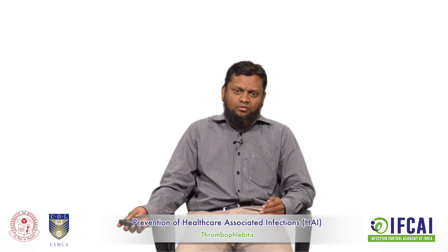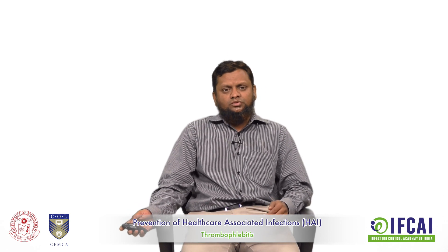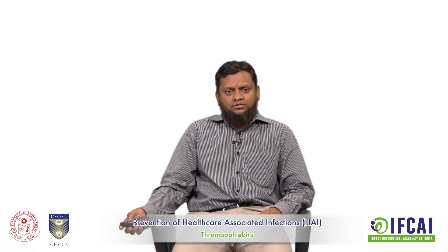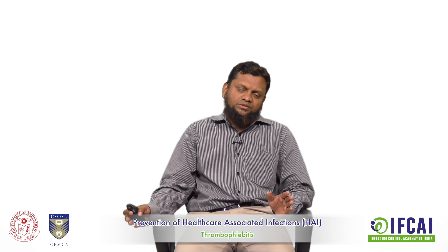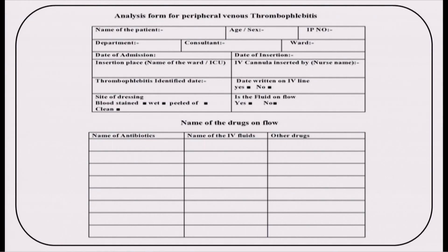The thrombophlebitis and bed sores analysis form contains patient details — name, date of admission, and date of discharge. If thrombophlebitis is identified, you record the date it was identified, whether the patient is on any drugs that can cause thrombophlebitis, any antibiotics, and IV fluids — all of that can be recorded in this form.